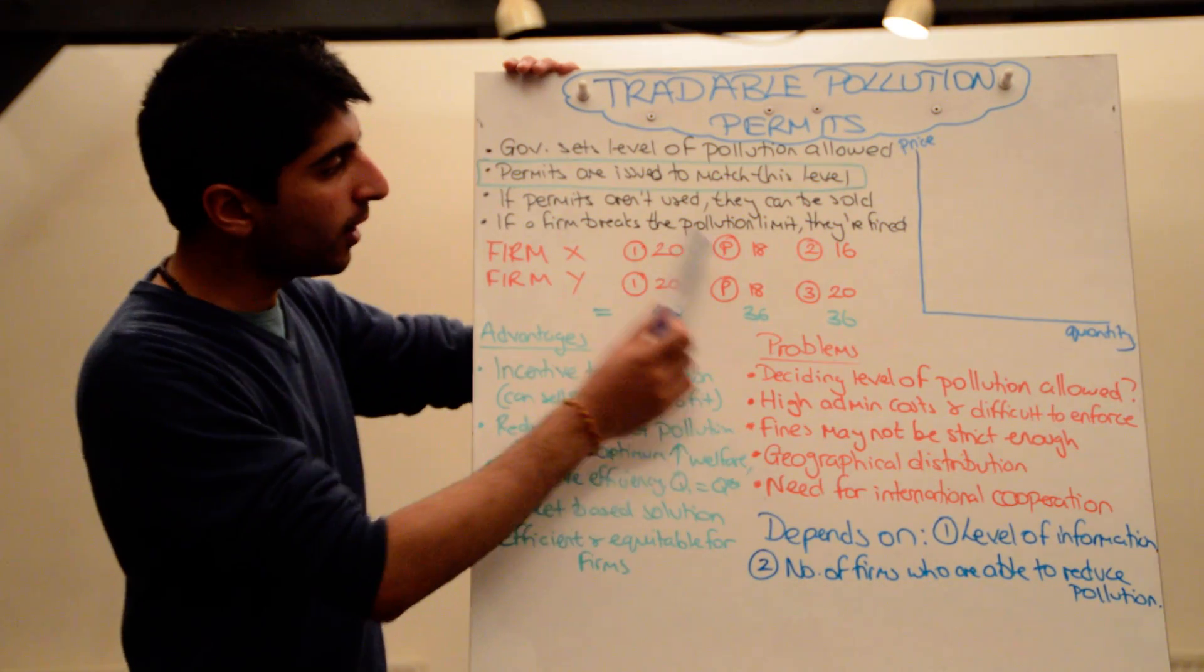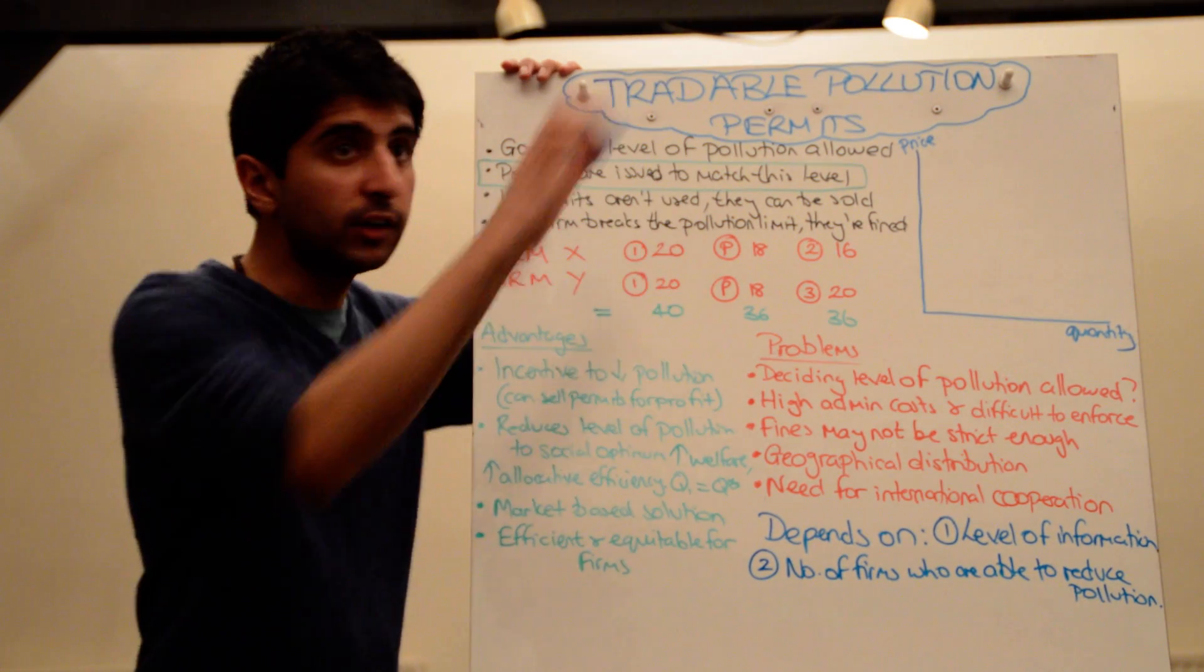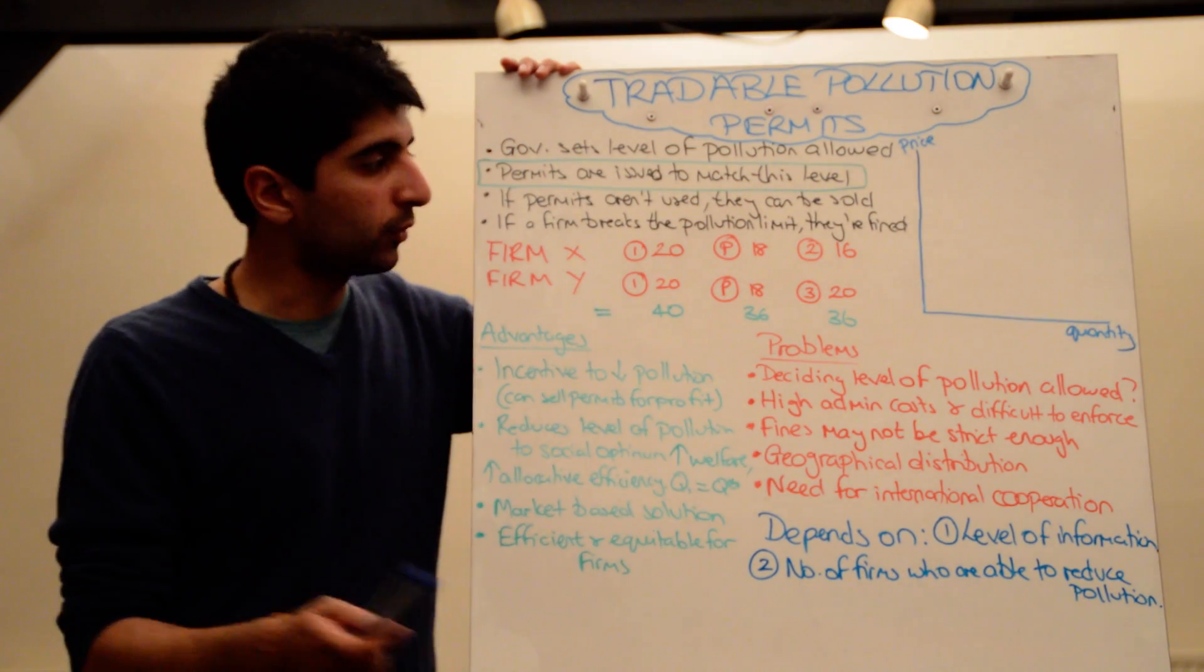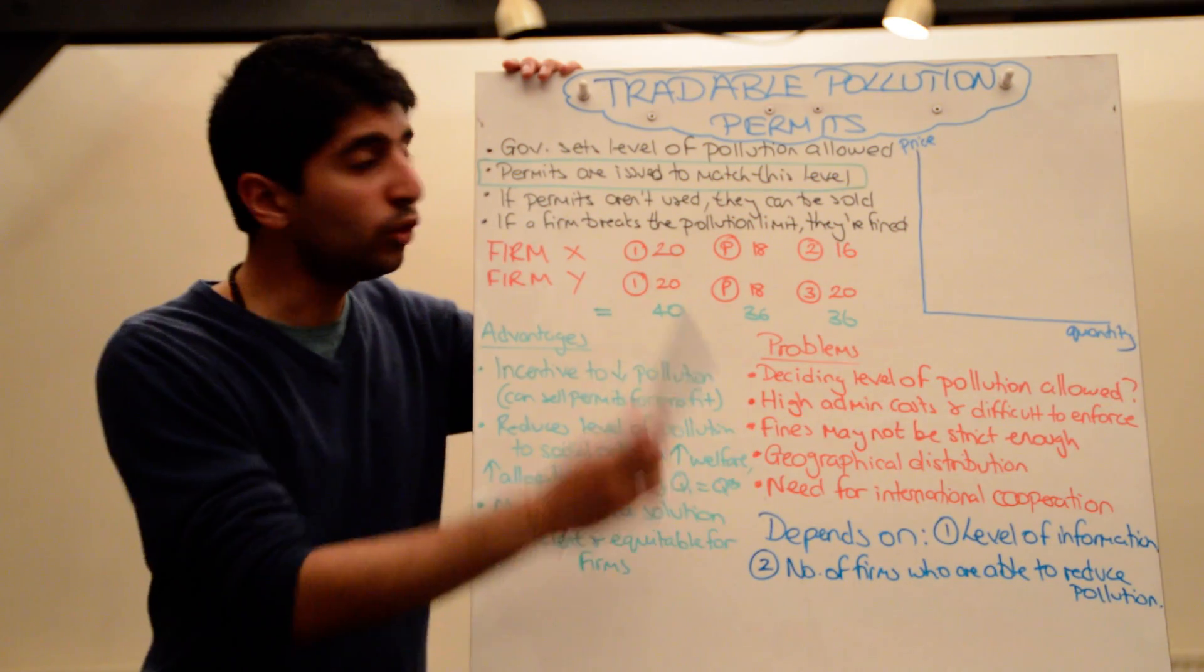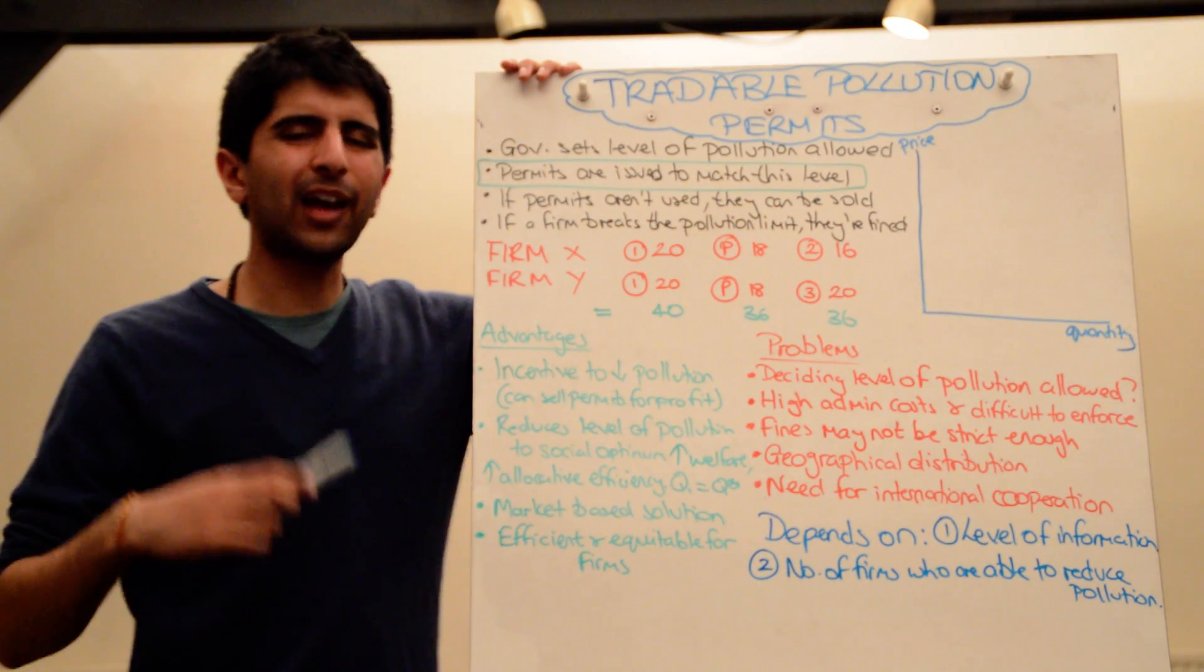So, let's say firm X here. Firm X invests in green technology and is able to reduce its level of pollution, but more than by what they're allowed to do. So let's say they reduce it to 16 units of pollution. Two less than what they actually have to do.